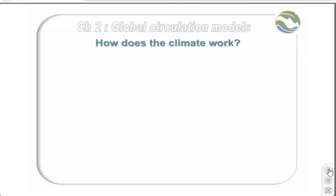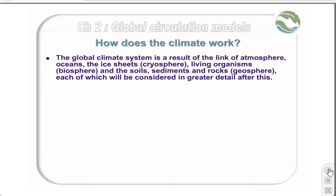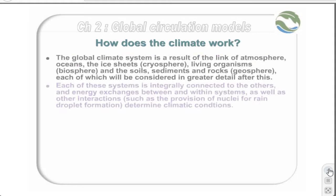So the first question to ask is, how does the climate work? The global climate system is the result of a link of atmosphere, oceans, ice sheets — also known as the cryosphere — living organisms, or the biosphere, and the soil, sediments, and rocks, which are the geosphere. Each of these will be considered in greater detail after this.